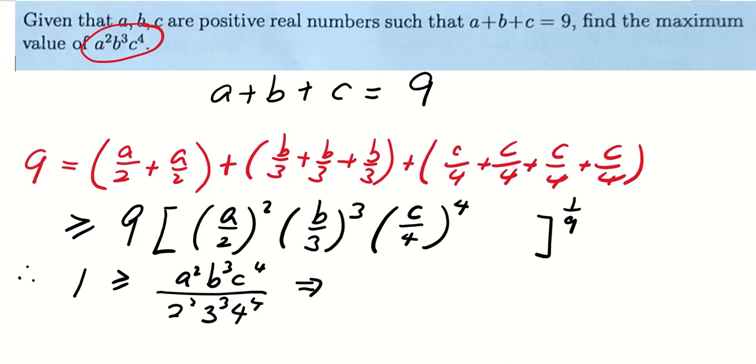We write the expression that we want to find as J. Therefore, J will be less than or equals to 2 power 2, 3 power 3, 4 power 4. Using direct calculation, this is equal to 27648.